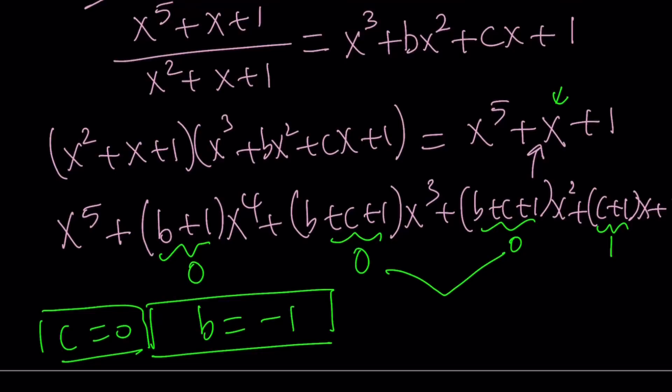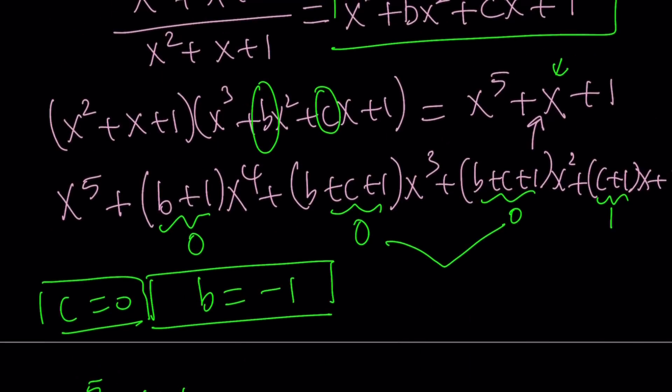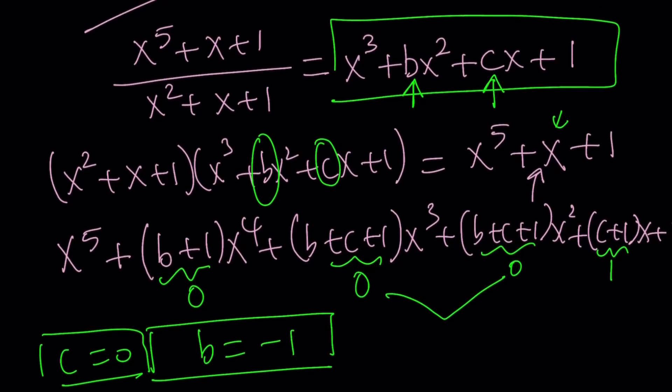So, we only needed to find b and c from here. Now, we can go ahead and plug it in and find the answer. So, the quotient, when we divide x to the fifth plus x plus one by x squared plus x plus one, it is supposed to be x cubed minus x squared plus one. Because b is negative one, it's going to go here, and c is zero, and that's going to go here. Awesome.